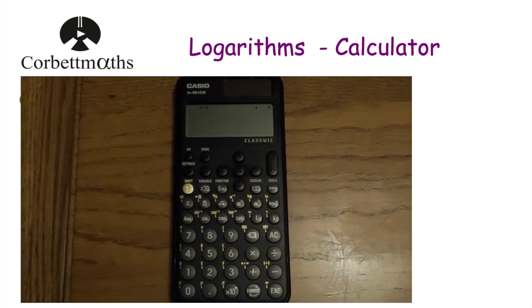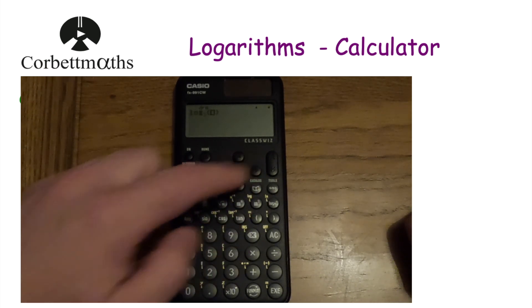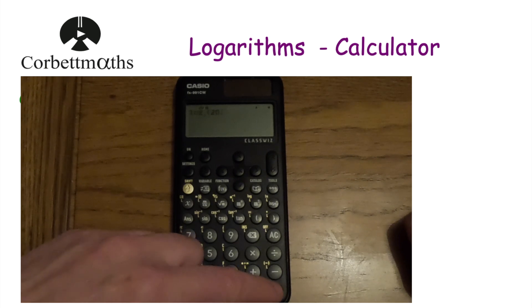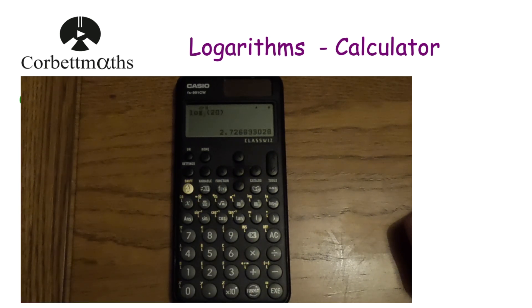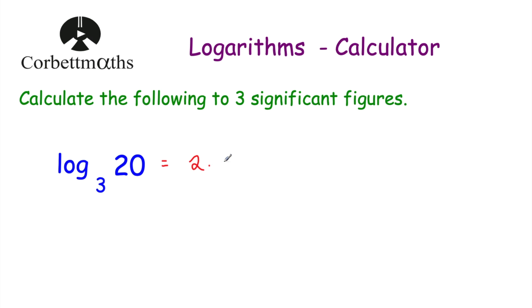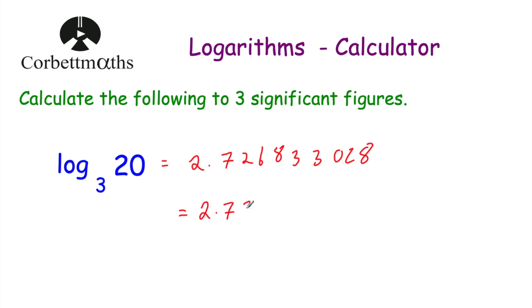We want to type in log to base 3 of 20. Press that button, log to base 3, go across then 20, and then press execute or equals. We get 2.726833028. We've been asked to give our answer to three significant figures. Rounding to three significant figures: that's 2.7, then we've got 2, 6 — so we round up, giving us 3. So the answer to three significant figures is 2.73.